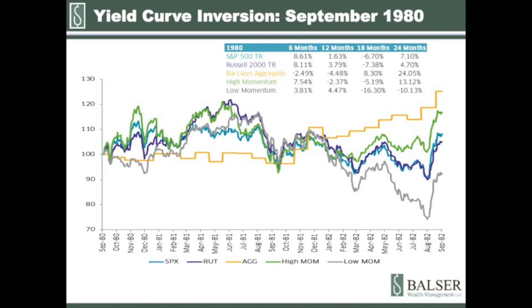The next inversion in our example was in September of 1980. This instance began with a quick rally, which lost steam quickly between 6 and 12 months. About a year in, bonds rallied sharply, leading them into the generational top in September of 1981. Equities moved sideways in a trading range for two years after the curve inverted. It didn't hurt you to own stocks, but you didn't make much money either. The exception was the momentum laggards — poor momentum stocks had a brief run between 6 and 12 months after the inversion, but were to be avoided for the rest of the time.